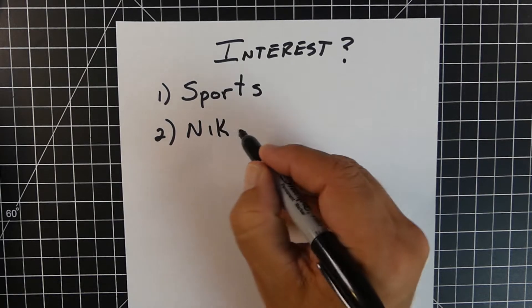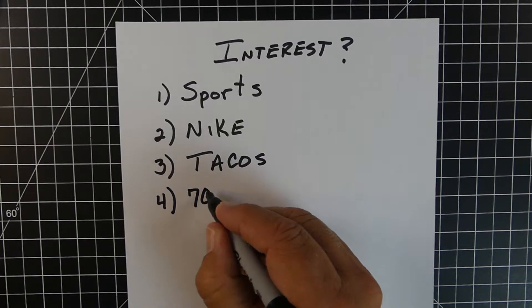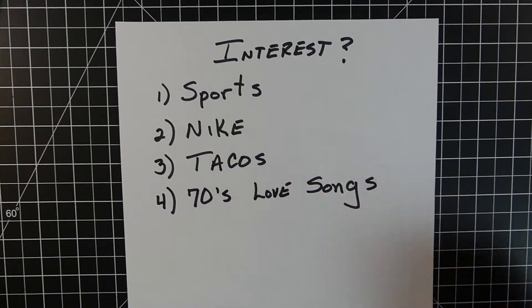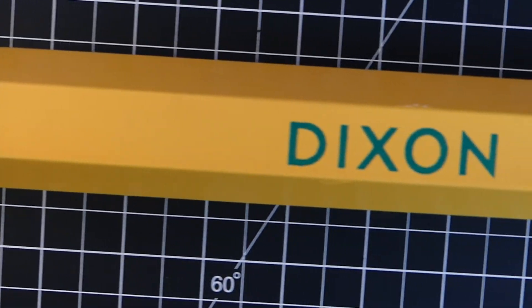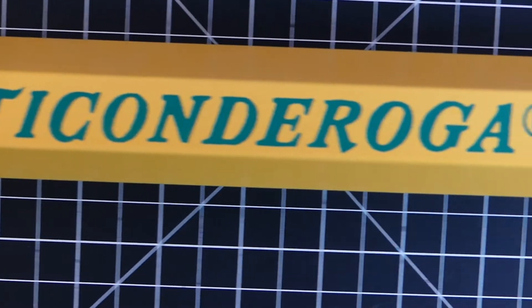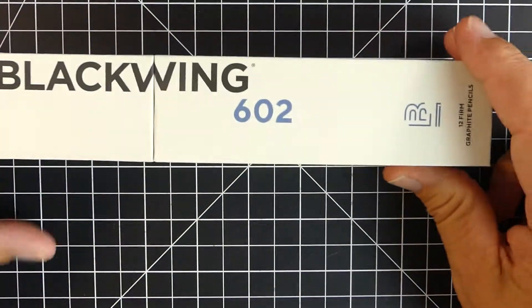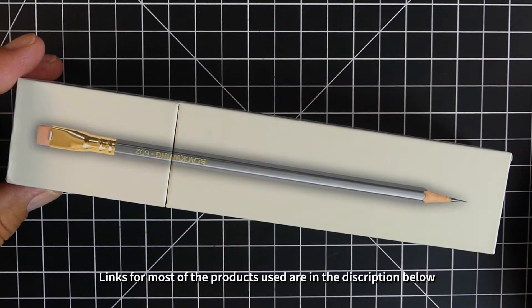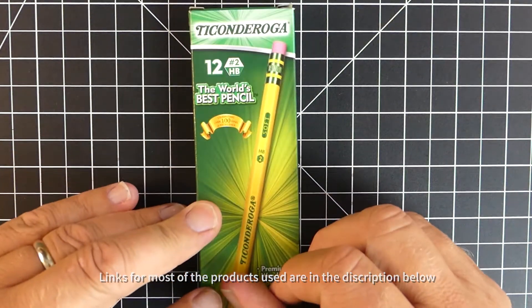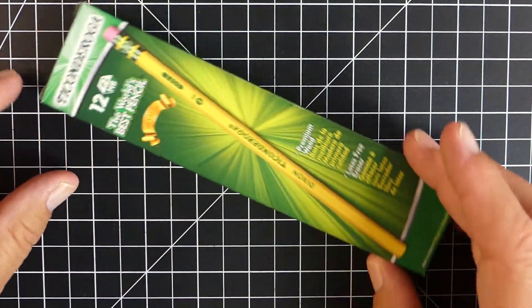The first thing you want to do with your students is find out what they're interested in. For me, for example, I like sports, Nike, tacos, and of course, 70s love songs. But that's not what I'm going to focus on today. What I'm going to try to do is make a cereal box that's the Dixon Ticonderoga pencil. Now, to be honest, my favorite is actually the Blackwing 602. It's kind of like the Ferrari for pencils. But the Ticonderoga is my day-to-day workhorse, and it's my favorite for students to use as well.